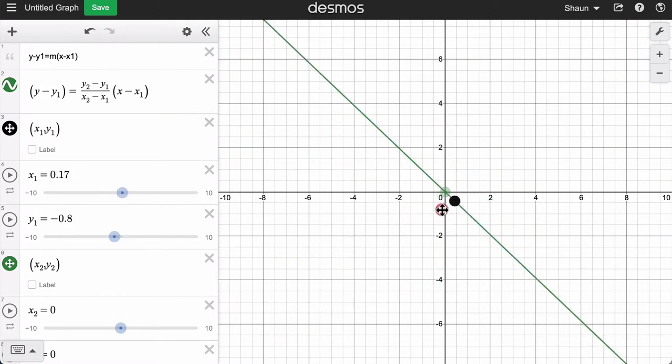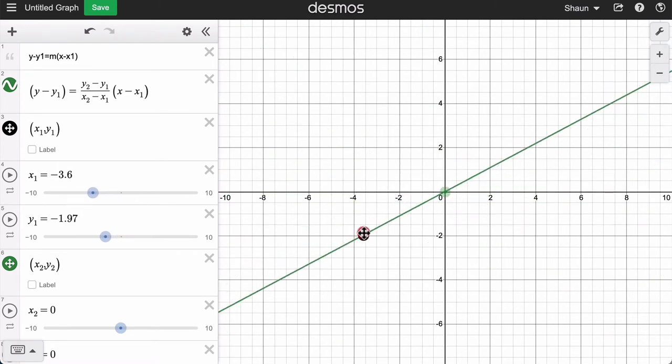Now we have a line. The cool thing here is that we want to restrict the domain or the range of this so that wherever we're moving our points, it knows to only include between those two points. And there are many ways to do this, but one of my favorites, I'm going to do it like this right here.